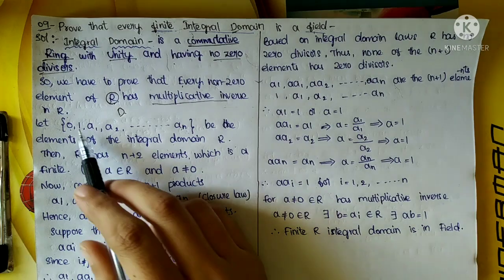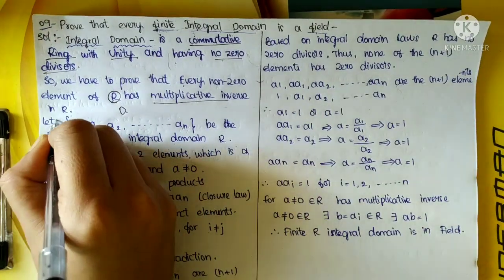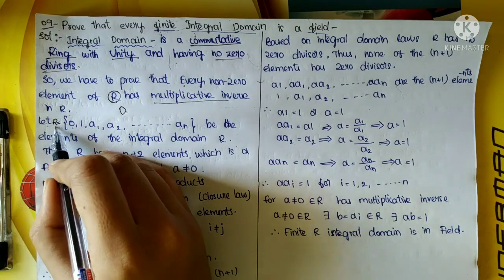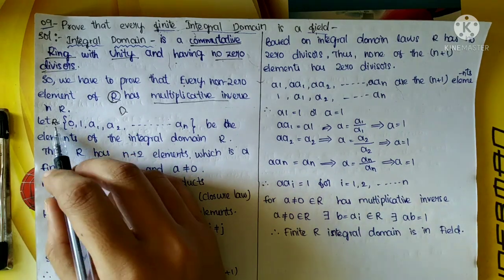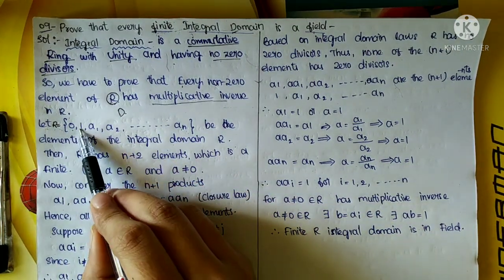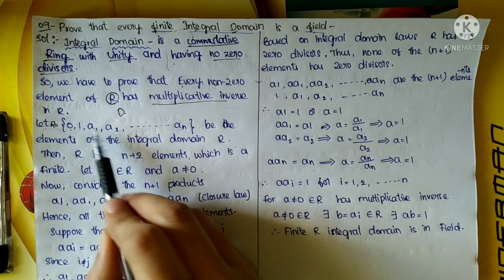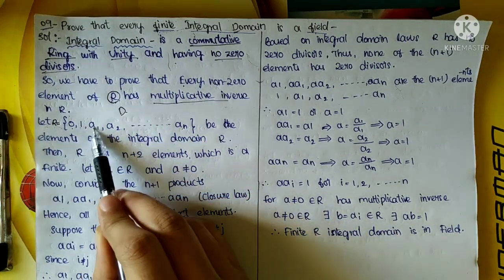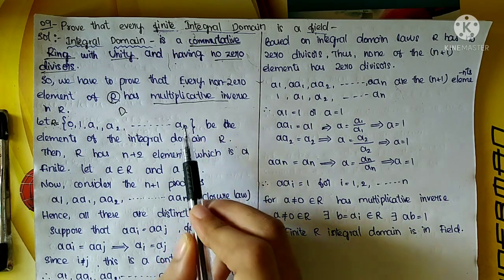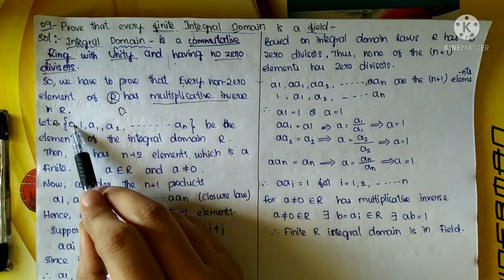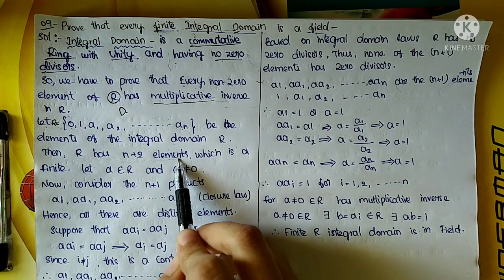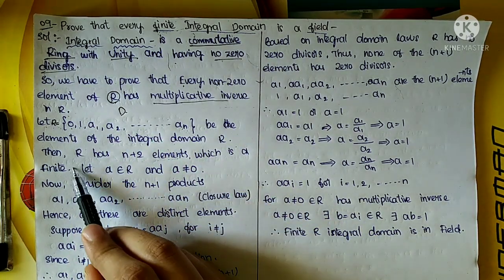So R has N plus 2 elements which is finite. R is a finite set, and in this finite set there are N elements a1, a2, and so on — N elements — so N plus 1 and with zero that gives N plus 2 elements total.